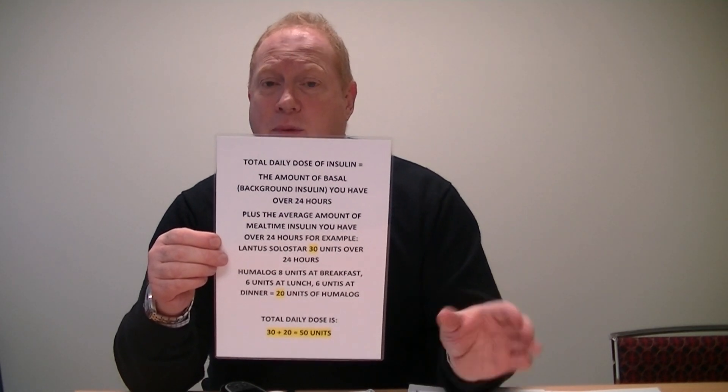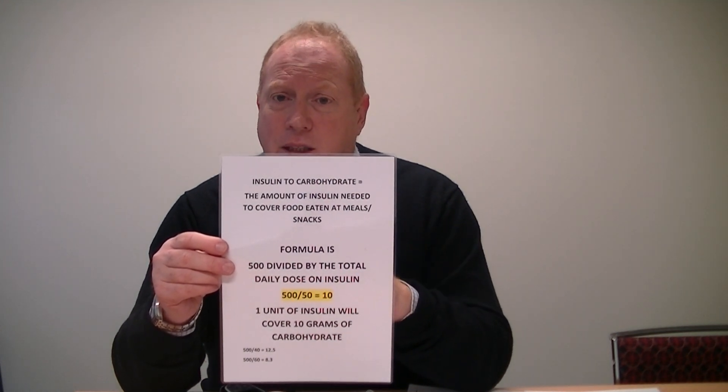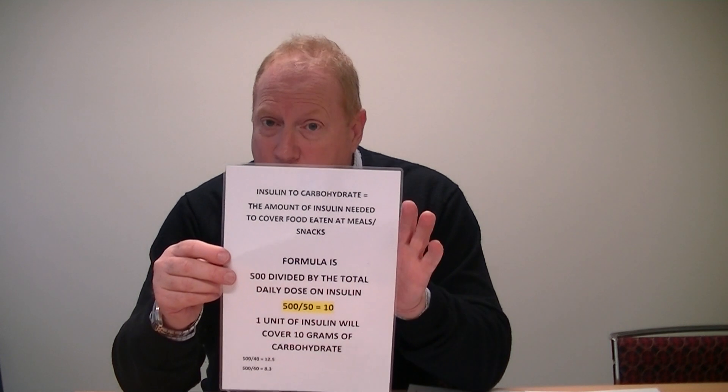This total daily dose is used to get our insulin-to-carb ratio and our insulin sensitivity factor or correction factor. The insulin-to-carb ratio is the amount of grams of carbohydrate that one unit of insulin will cover — it's called the 500 rule. So it's 500 divided by the total daily dose: 500 divided by 50 equals 10. One unit of Humalog in this instance will cover 10 grams of carbohydrate.